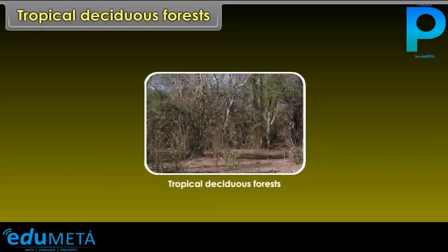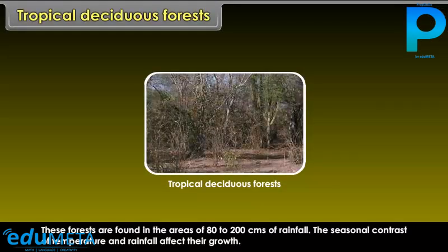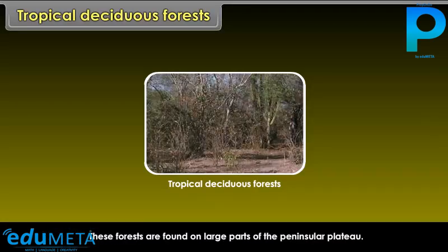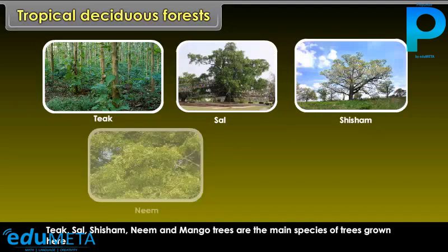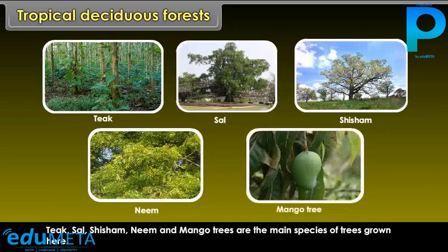Tropical deciduous forests are found in areas of 80 to 200 cm of rainfall. The seasonal contrast of temperature and rainfall affects their growth. Teak, sal, shisham, neem, and mango trees are the main species of trees grown here.